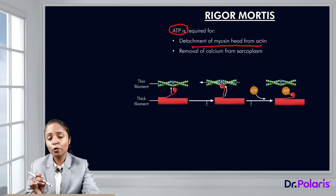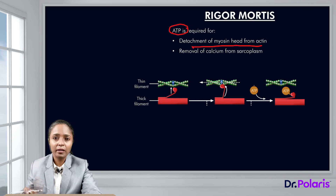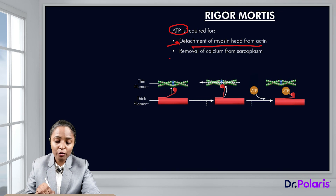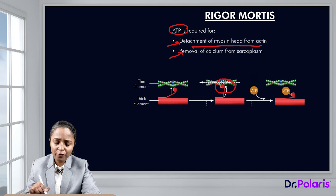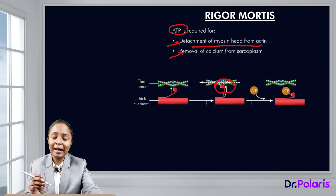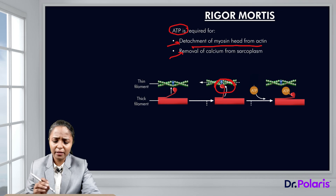ATP is also required for the functioning of the SERCA pump. With death, new ATP cannot form, so it is not available for detachment of myosin head from actin or for removal of calcium from the sarcoplasm. The myosin head remains bound to the active site of actin and keeps it pulled, causing muscle rigidity after death. However, after some time, breakdown of all proteins ultimately leads to relaxation.